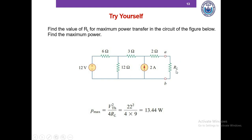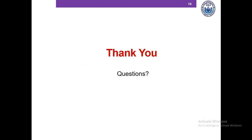Remove the load and determine the open circuit voltage — that will be VTH. Then look into terminals A and B with the load removed, replace voltage sources with short circuits and current sources with open circuits, find the equivalent resistance RTH. Then compute Pmax as VTH² divided by 4RTH. This is all based on your knowledge of Thevenin equivalent circuits, so if you haven't watched that video please go back and watch it. Let me know if you have any questions in the comment section. Thank you for your time.